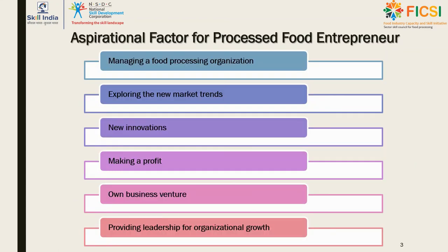The aspirational factors for a processed food entrepreneur involve being responsible for starting and managing a food processing organization by exploring the market, identifying opportunities in food processing units, innovating, giving a different dimension to products, sizing up their value, and working towards making a profit. After completing training, a person can move to different sub-sectors of food processing and start their own business venture. They can also join any small-scale or large-scale food processing unit, seeking new directions and ways to improve and grow the company, and providing leadership and direction for the organization.